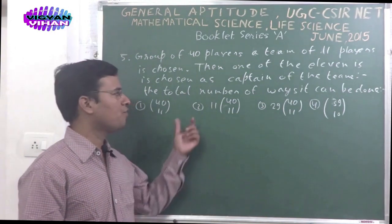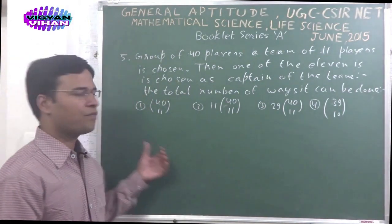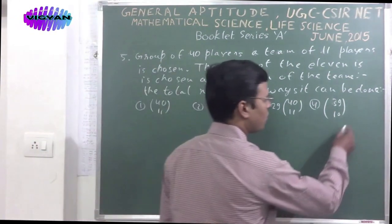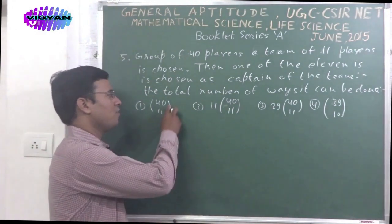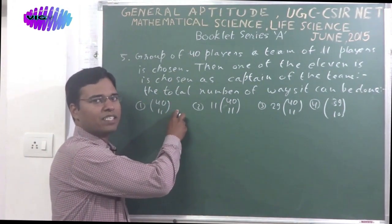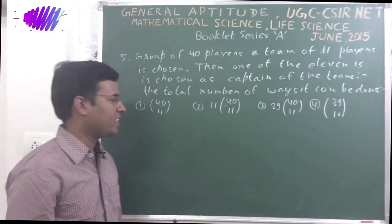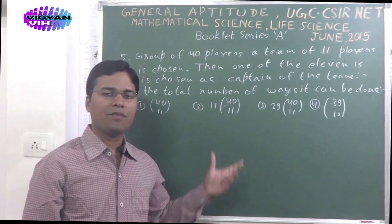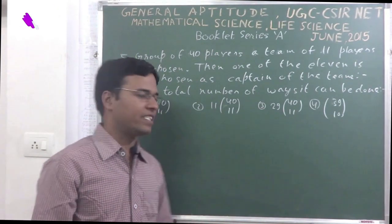We would have to get the total number of ways by which it can be done. There are 4 options. And according to the problem, that is a notation for 11 chosen from 40, that is combination, the method to choose 11 out of 40 players. Then there are 4 options. We would have to bifurcate the events. There are 2 events. First, choose 11 out of 40.